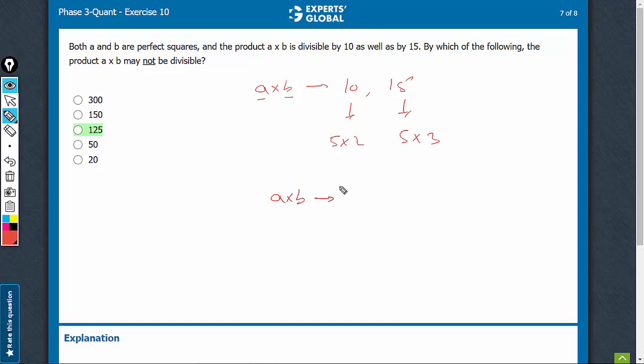A into B is bound to have some number of 5s, some number of 2s, and some number of 3s in them, and the powers are going to be positive even numbers.